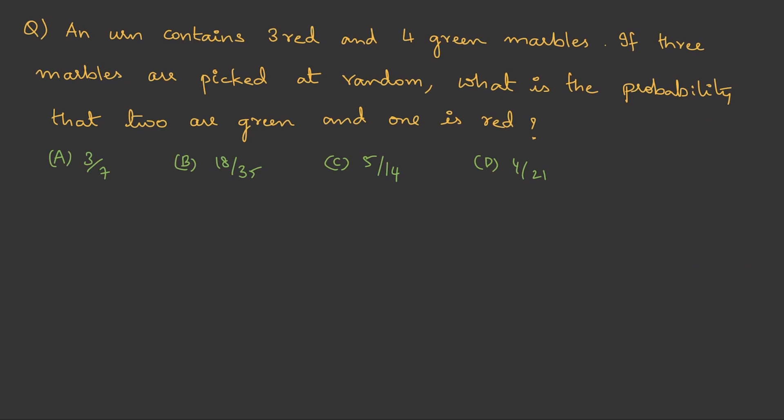Let's do one more question for practice. An urn contains, urn means like a box or a bag, 3 red and 4 green marbles. If 3 marbles are picked at random what is the probability that 2 are green and 1 is red? Again let me list out the marbles. We have 3 red and 4 green marbles. Therefore total is 7 marbles.